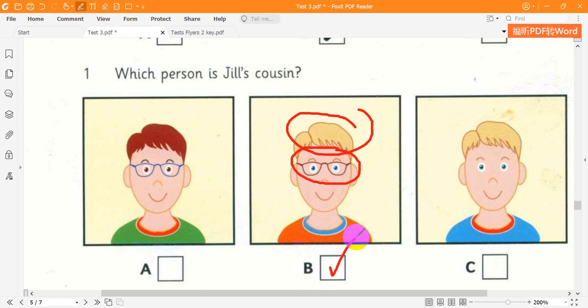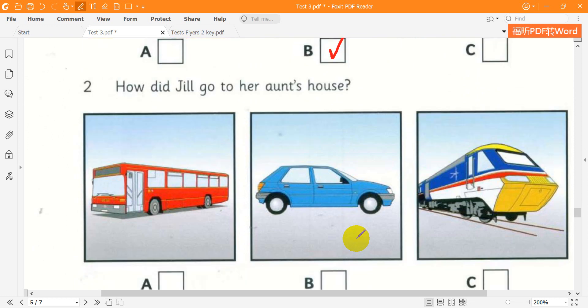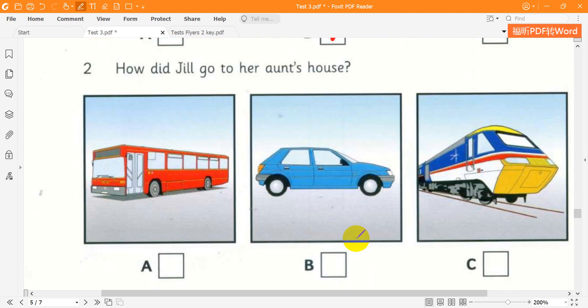Question 2. How did Jill go to her aunt's house? How did you go to your aunt's house, Jill? By car? No, because my dad was working and he couldn't take me. So did you go by bus? That's right. It's cheaper than the train.